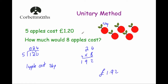Using the unitary method, we divided the total price of one pound twenty by five to find the cost of one apple, and then once we know the cost of one apple we can multiply by any number we want. For eight apples we times 24 by eight; if we want 15 apples we would times 24 by 15, and so on.